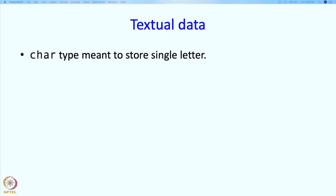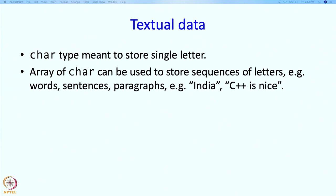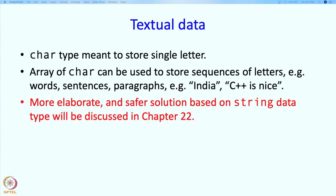We have already talked a little bit about textual data. The char type was specially meant for storing single letters. The natural step would be to use an array of char to store sequences of letters — words, sentences, paragraphs, or character strings like "India" or "C++ is nice". The textual data representation I'm going to talk about today is derived from the C language. C++ has nicer representations which we'll learn about later, but what we learn today will also be useful for those.